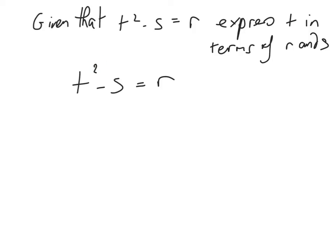Now you might think, well, then we just have to square root this side and square root this side. That's not quite going to work because of the minus s here. So we need to get the t squared on its own before we can do the square root.